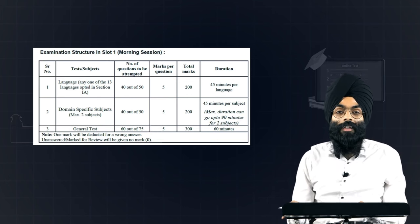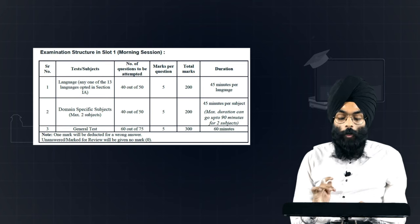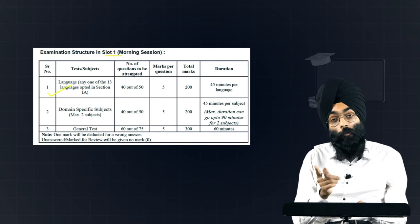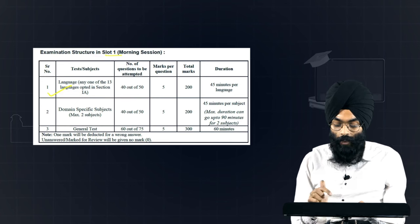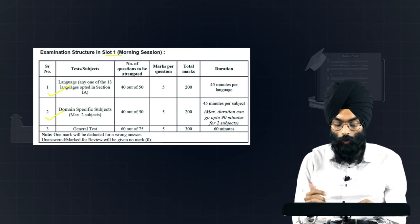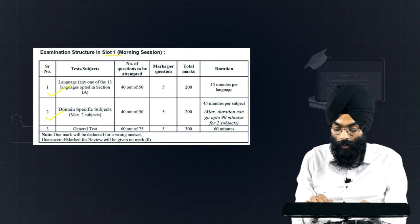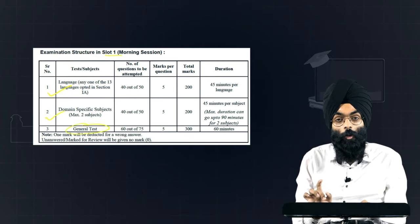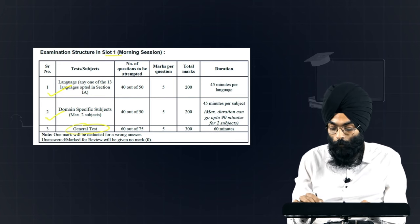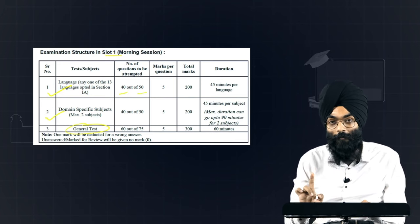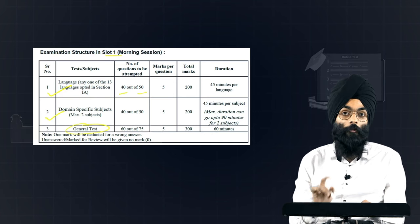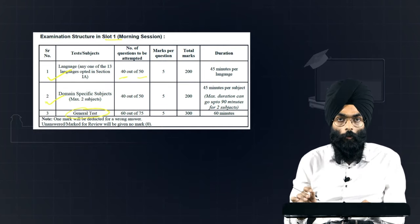The examination has been divided into two slots. Slot 1 is the morning session and Slot 2 is in the afternoon. In Slot 1 you can take one language from the main list — English or Hindi — and then two domain-specific subjects like accountancy or business studies. Please note the general test can only be taken in Slot 1. There will be internal choice: out of 50 questions you need to attempt only 40. Each question carries 5 marks, and there is negative marking — minus 1 for every wrong answer, and zero for unattempted questions.